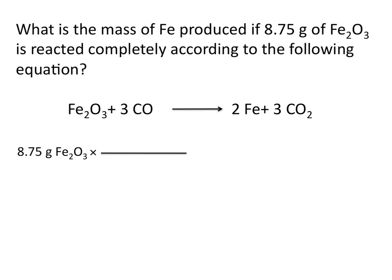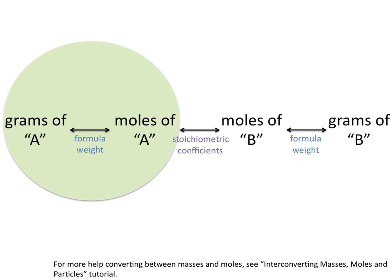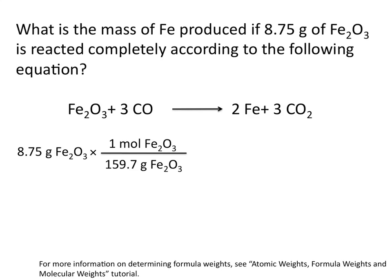We need to use a conversion factor. We know that we need to go from grams of Fe2O3 to moles of Fe2O3, and we'll do that using the formula weight. Make sure you put grams of Fe2O3 on the bottom so that it will cancel with the grams of Fe2O3 on top. Now that we have moles of Fe2O3, we can convert from moles of iron oxide to moles of iron.